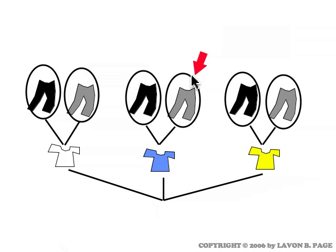The circle that the red arrow is pointing to would represent the way of dressing involving a blue shirt and gray pants.